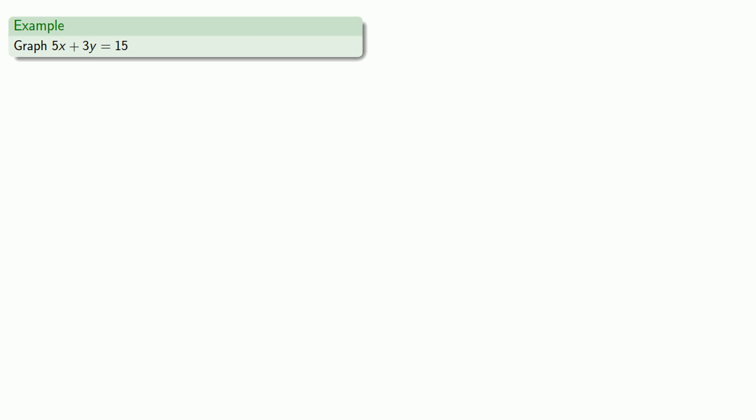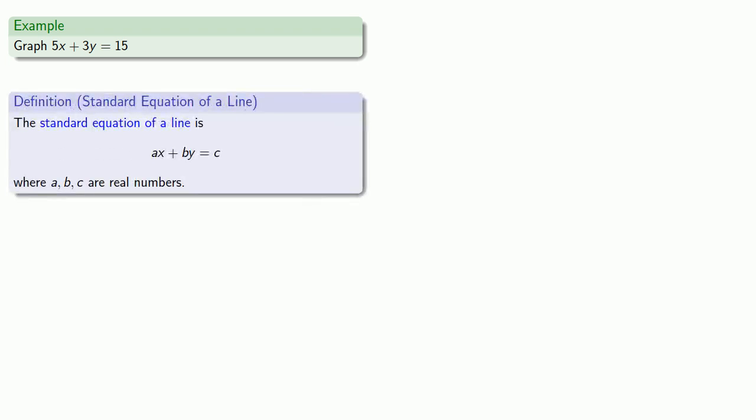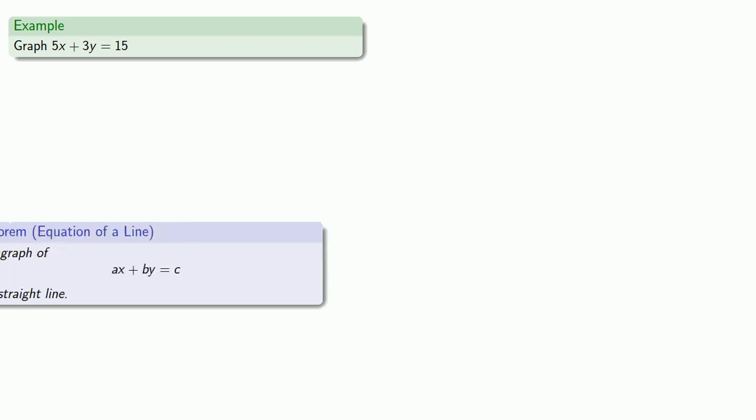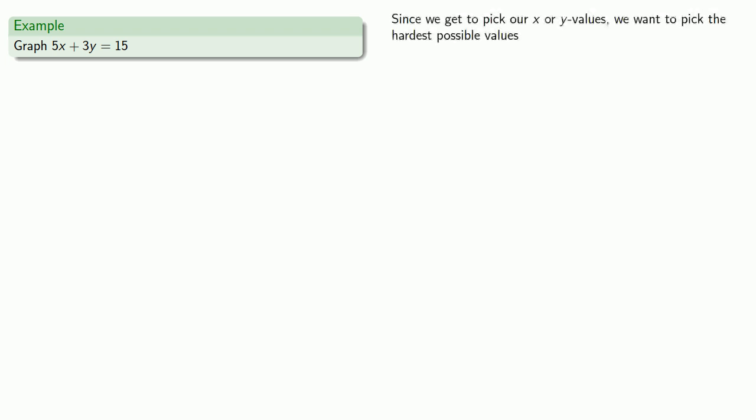So, let's take a look at the graph of 3x plus 5y equals 15. Our definition says that we have the standard equation for a line, and the theorem says that when we graph this, we will actually get a straight line. So, from geometry, we know that we only need two points to graph a line. So, let's find two points that satisfy this equation. Since we get to pick our x or y values, we want to pick the hardest possible value so that people will marvel at our awesomeness. Or, we might actually want to pick the easiest values that we can work with. So, we like 0. If x equals 0...